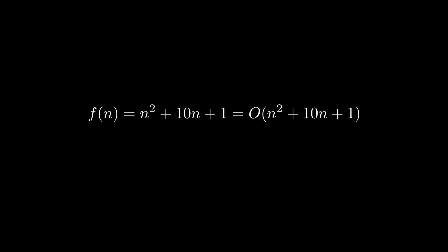For instance, if we have the function f(n) = n² + 10n + 1, then f(n) is of course equal to O(n² + 10n + 1), but it is also equal to O(n²), since n² is the fastest growing term in the function.